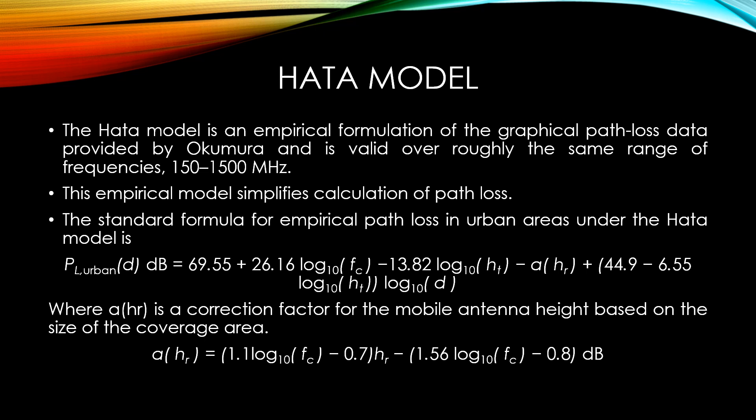The parameters in this model are the same as under the Okumura model. And a(hr) is the correction factor for the mobile antenna height based on the size of the coverage area. Where a(hr) equal to (1.1 log 10 fc minus 0.7) hr minus (1.56 log 10 fc minus 0.8) dB.